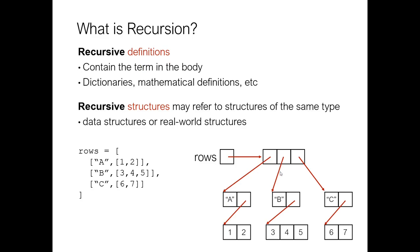Recursive data structures are data structures that have the same kind of data structure embedded in them. In this case, we have a list — rows — that contains three lists. Each of those objects contains more lists. So this one has a string A and another list, that list has one and two in it. The list here contains B and a second list also with three, four, and five in it. Lists that contain lists that contain lists are recursive data structures, and we'll be using these in some of our examples later in today's lecture.